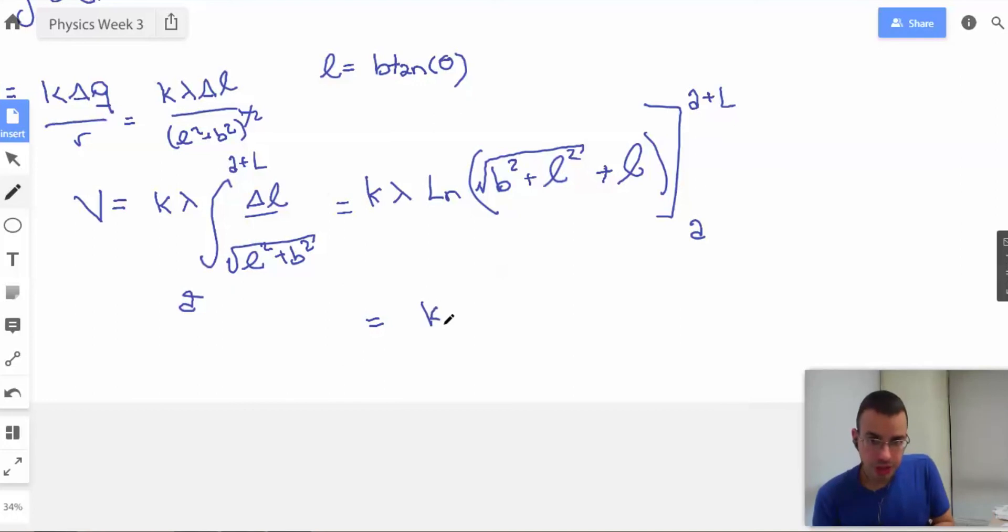So, the big total we'll have will be k lambda natural log of b squared plus a plus big L squared, which would be a squared plus 2aL plus L squared, square rooted, plus a plus L. And then we're gonna subtract the same thing for a. So, what we can do then is we can just put one on top and the other one on bottom.